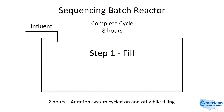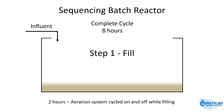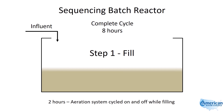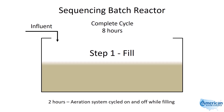The name of this next process configuration, sequencing batch reactor, is descriptive of how this process works. There is a specific sequence to the steps of a complete cycle. The water is treated in batches rather than using a plug flow design, and the entire process takes place in the biological reactor. Because of this batch design, there must be some form of flow equalization or multiple reactors capable of handling continuous wastewater flow.